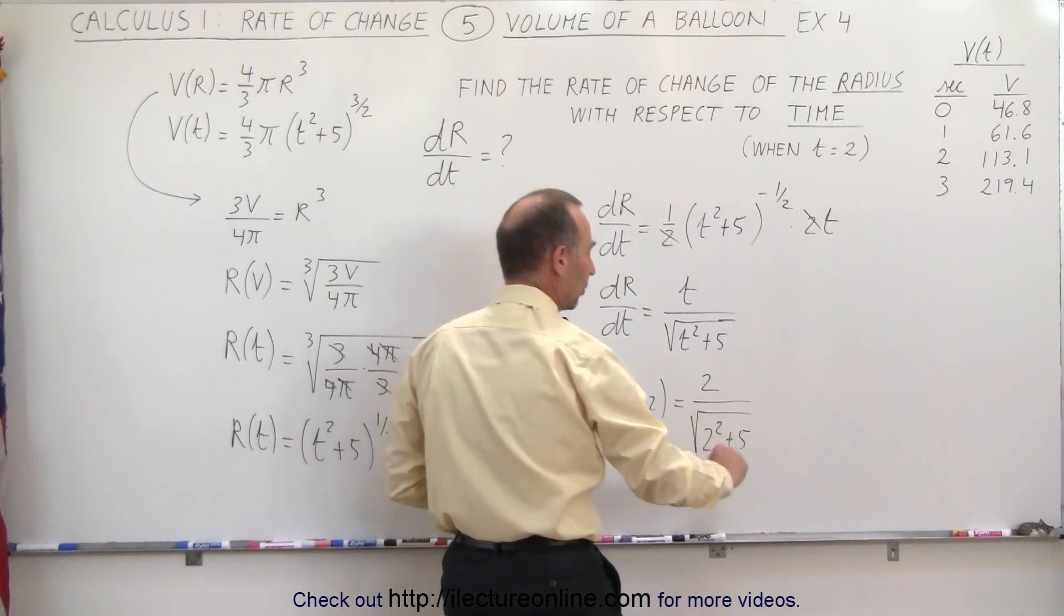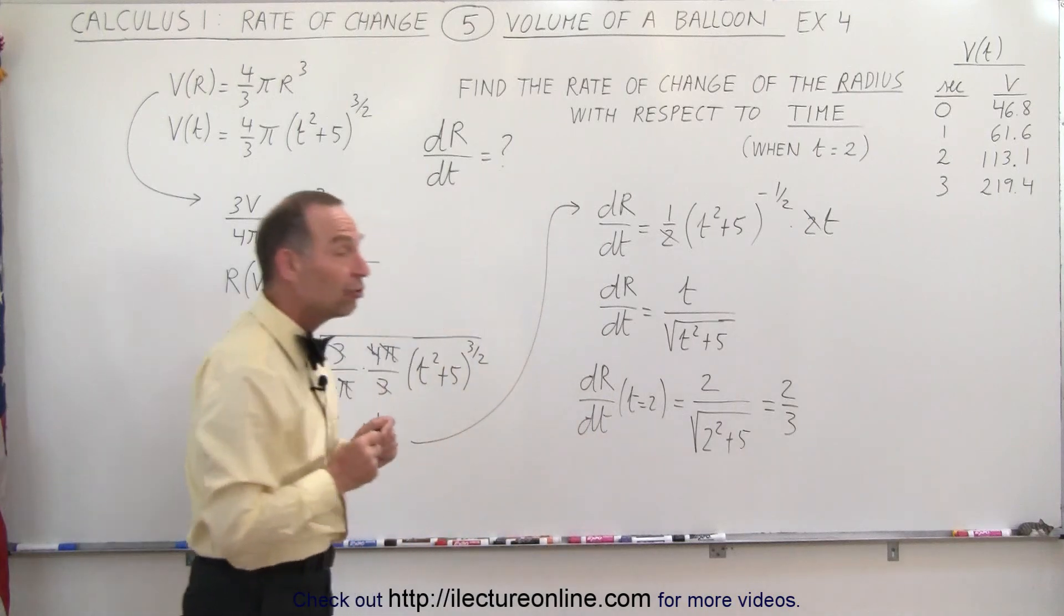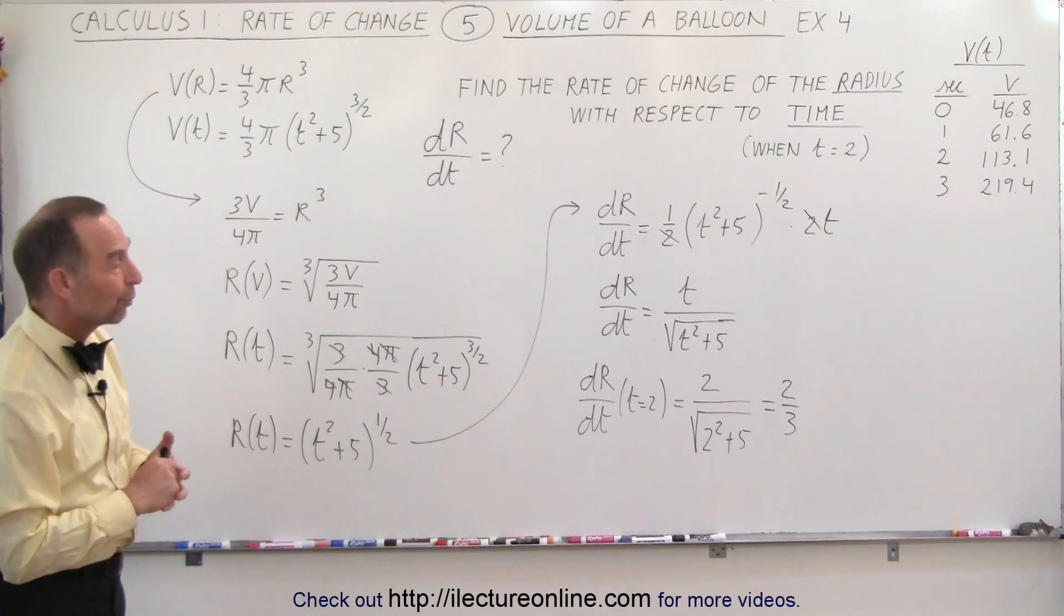So I have a 2 in the numerator divided by the square root of 2² + 5. Of course, that's 9, the square root of 9 is 3, so this would be equal to 2/3, and that would be the rate of change of the radius with respect to time.